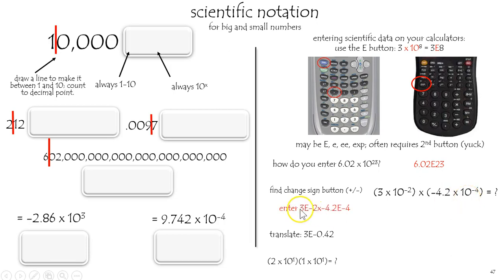So there it is. 3e negative 2 multiplied negative 4.2e negative 4. That is much faster than doing the parentheses, the caret, and getting it all wrong.